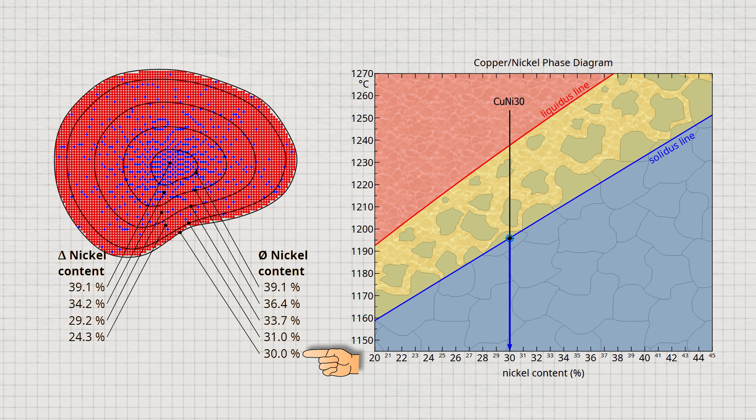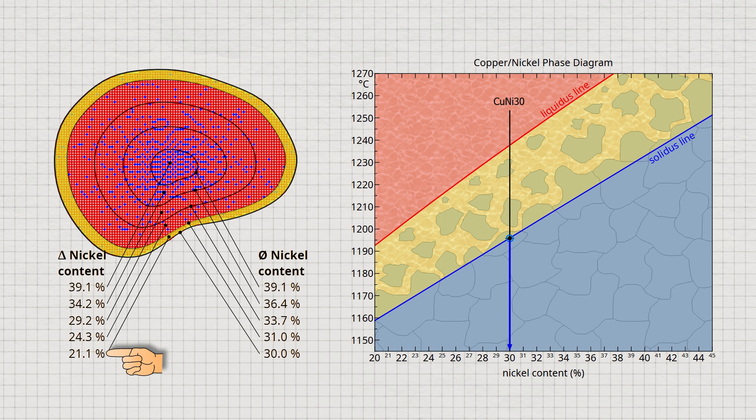In this case, however, the last solidified layer has an average nickel content of only 21.1%. It can be seen that the chemical composition of the solid solution varies from the grain center at the beginning of solidification to the edge zone at the end of solidification.